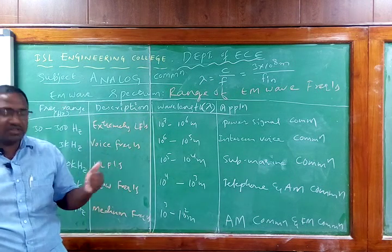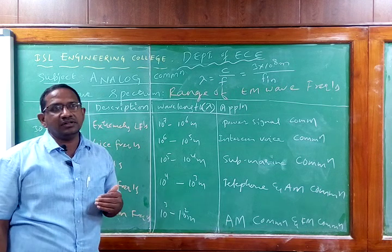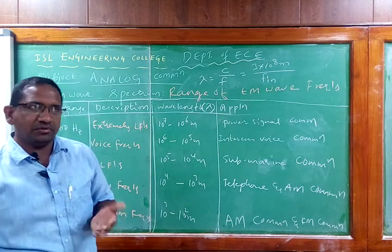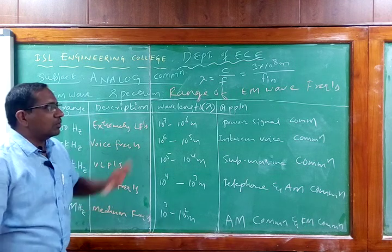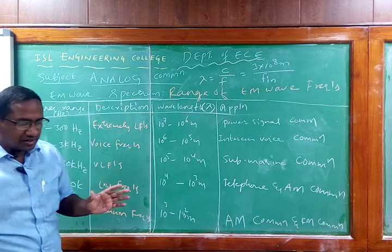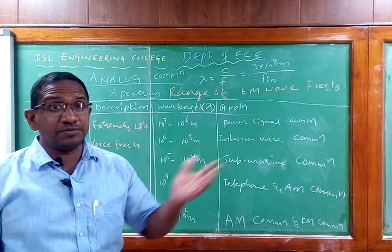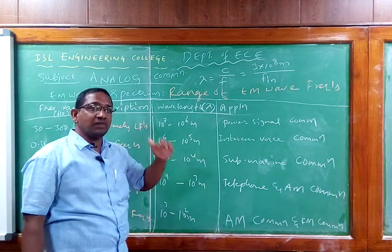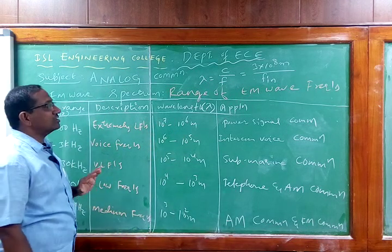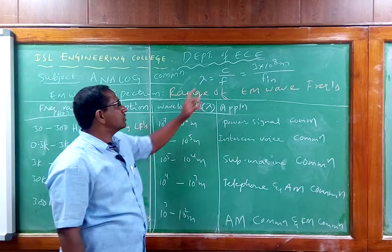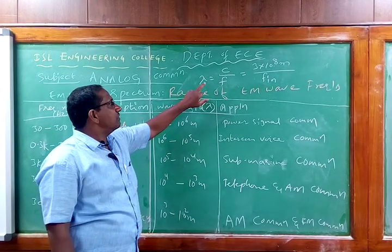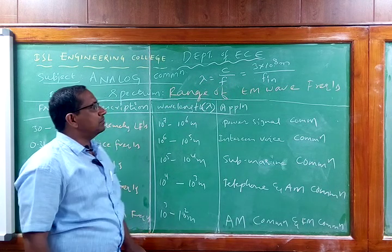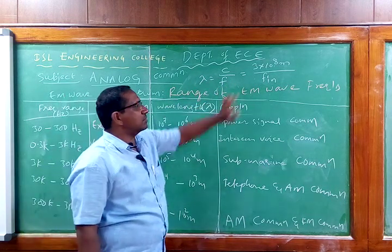As far as an electronic system is concerned, it processes the signal; as far as the antenna is concerned, it radiates a wave. But more or less both are the same for us. Whatever electrical signal we have in the transmitter, that same signal is radiated as an EM wave by the transmitting antenna. So λ = C / F, where C = 3 × 10⁸ m/s and F is the input signal frequency.